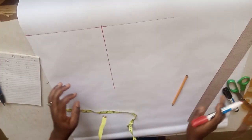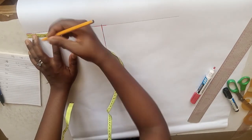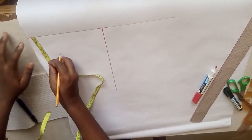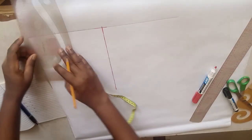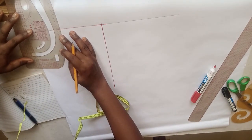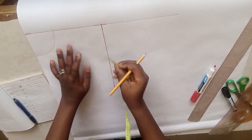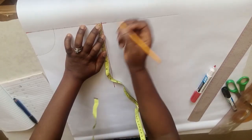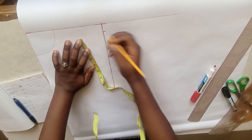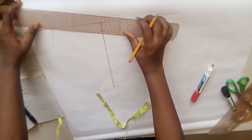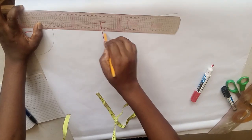Now we draw our basic neckline. The basic neckline is 3 inches wide and 3 inches deep, so 3 by 3 inches. Join the curve together — this is our basic neckline. Next, from the shoulder line we step down by 1 inch to get the shoulder slant, because our shoulder is not straight. To have fitness on the shoulder area we draw the shoulder slant like so.